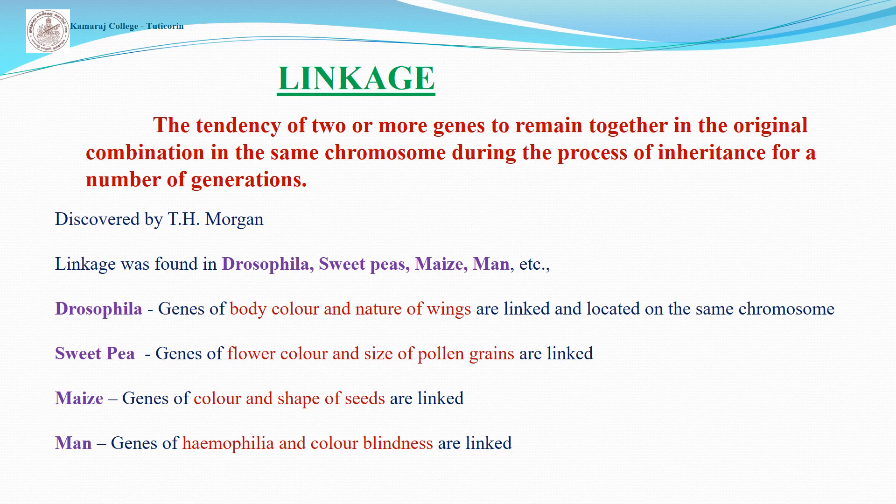Here we have some examples. Body color and nature of wings — these characters are located in the same chromosomes. In sweet pea, flower color and size of pollen grains. In mice, color and shape of seeds. In humans, haemophilia and color blindness.